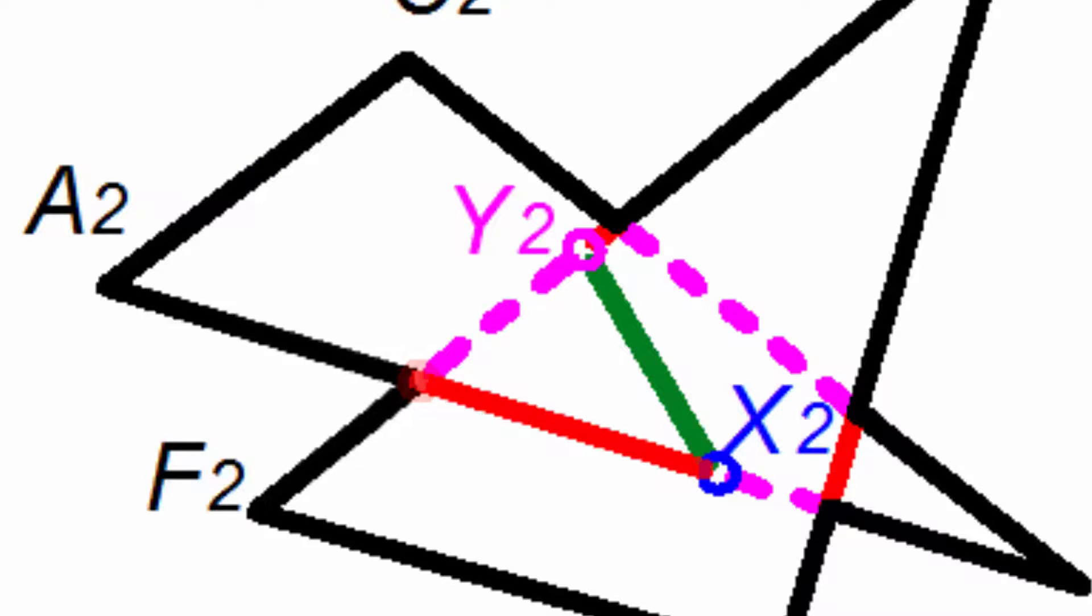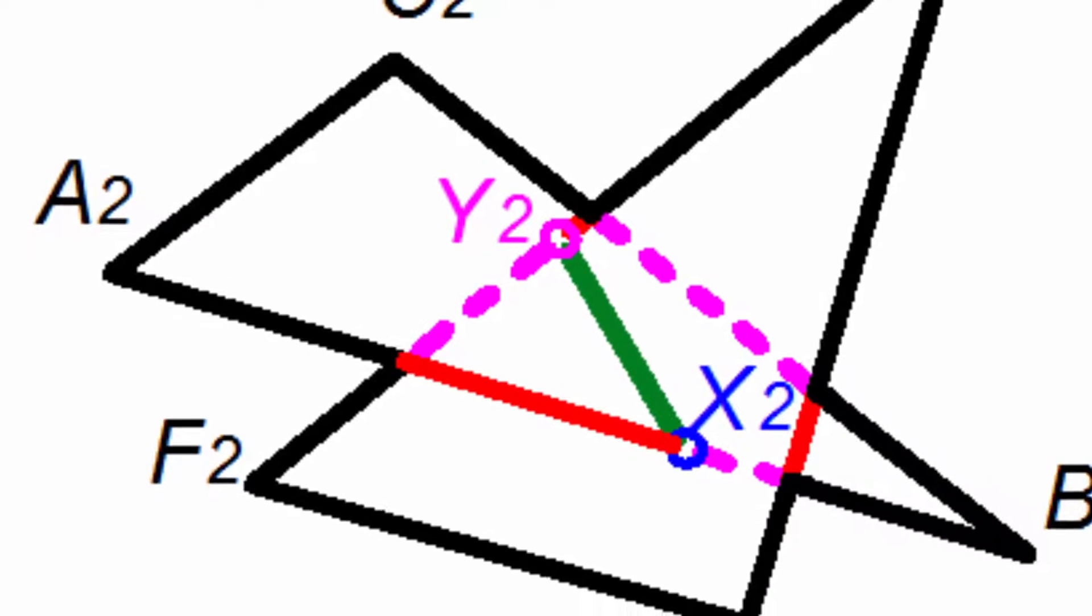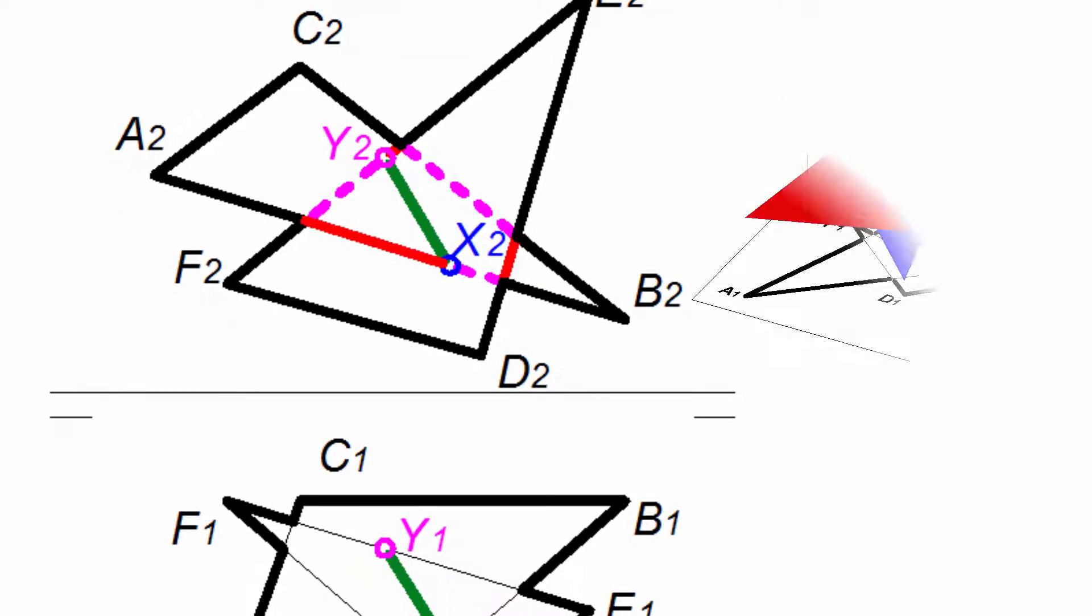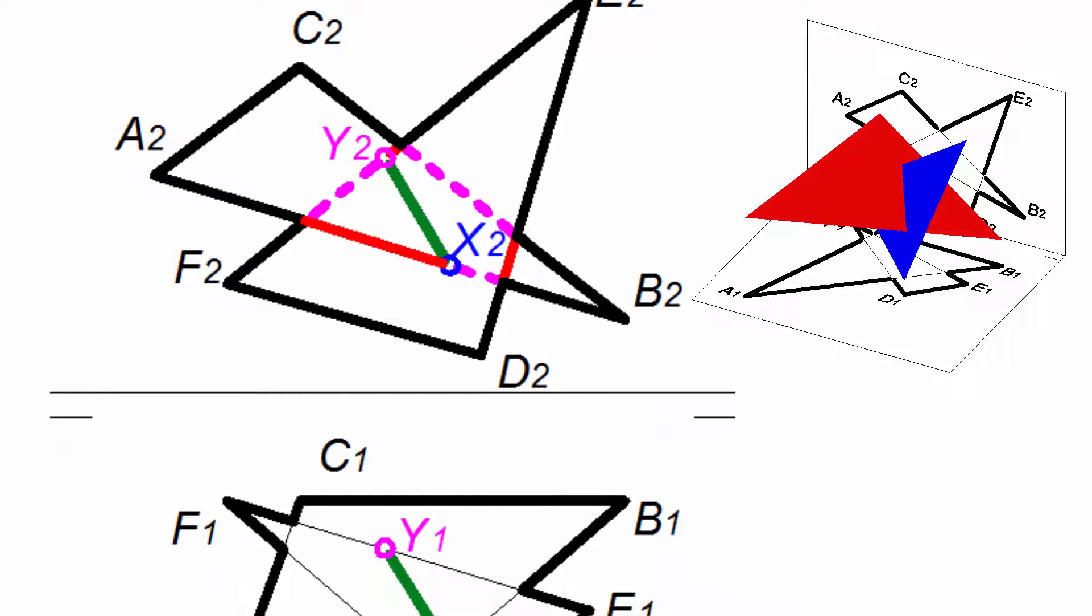It remains to determine the visibility of the top view. A segment which is seen in vertical projection tells us nothing of how it is in the other projection, so we need to determine at least one segment.